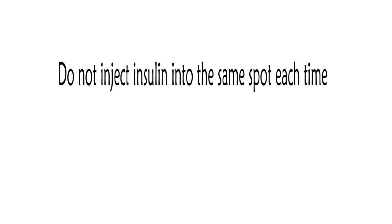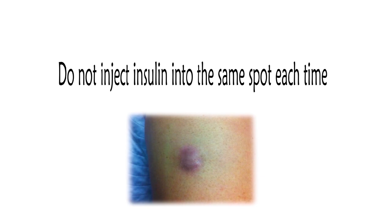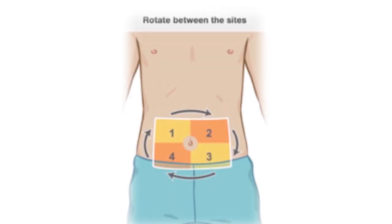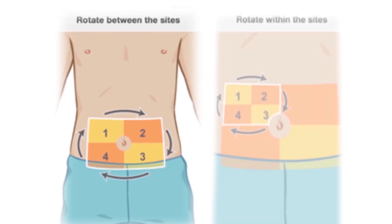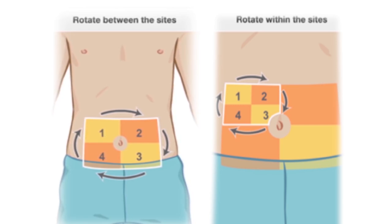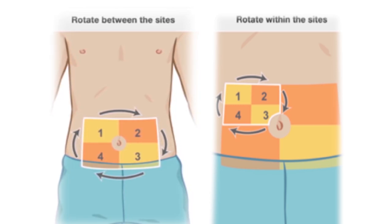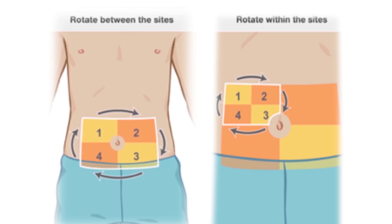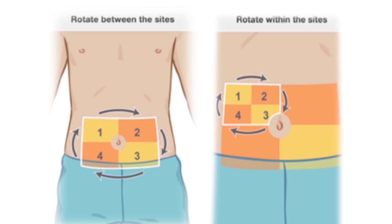Do not inject insulin into the same spot each time — it can cause hard lumps to grow under your skin. You can avoid this by rotating the injection site. For example, if you select the abdomen, split the selected injection area into 4 large sections. Select one section and split it into 4 small sections. Then rotate clockwise through these 4 small sections for a week. In the following week, select the next large section clockwise from the previous week and divide it into 4 small sections. Repeat the rotation between small sections and large sections each following week.